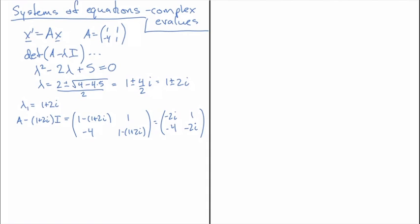It's sometimes harder to see, but as long as we found the eigenvalue correctly, the A minus lambda I matrix should have rows that are scalar multiples of each other. In the complex case the rows will always be some complex multiple of one another. Here the second row is minus 2i times the first row — you can verify that minus 2i times minus 2i gives i squared times 4, which is minus 4, matching the second row.